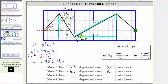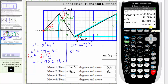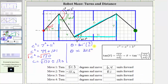Now let's determine angle theta in the right triangle, which we will then add to 60.3 to find the turn angle. Angle theta equals arctan of the opposite over adjacent, which is seven over eleven. Theta is approximately 32.5 degrees. The turn angle, because it is counterclockwise and therefore positive, is 60.3 plus 32.5, which equals 92.8 degrees. So move three is a turn of 92.8 degrees and a move of approximately 13.0 units.